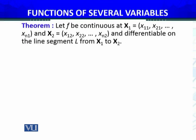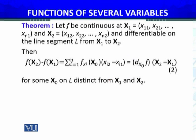Now we have the mean value theorem. Let f be continuous at x1 and x2, two points in the domain, and differentiable on the line segment from x1 to x2. Then there must exist some x0 on that line such that f of x2 minus f of x1 equals the differential of f at x0 times x2 minus x1.